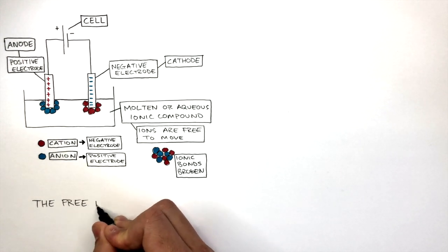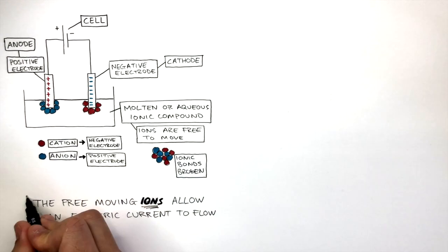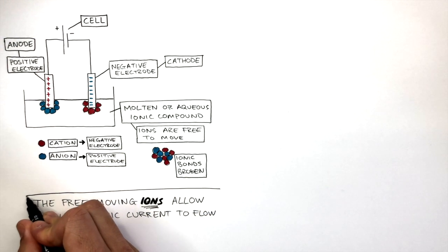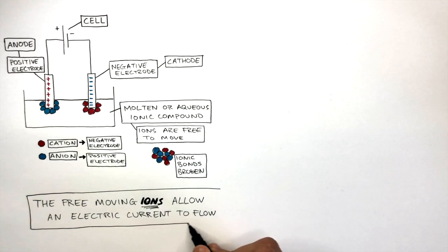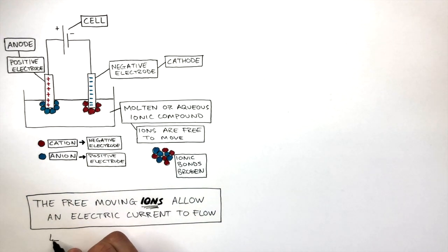The free moving ions allow an electric current to flow. If the ions cannot move because the ionic compound is in a solid, fixed arrangement, then there will be no electric current. Remember, it's the ions that move towards the electrodes, not the electrons. The electrons move within the wires.